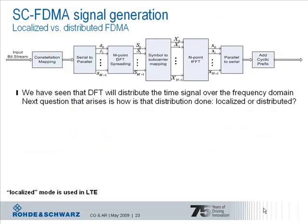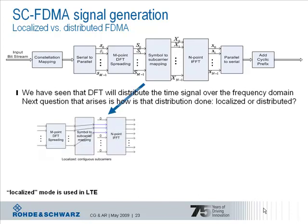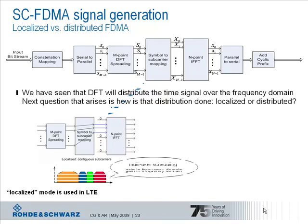The question that comes up is how the subcarrier mapping is realized in the uplink. There are two possibilities, each with one advantage. First, we have localized mapping. In localized mode, the modulation symbols are assigned to adjacent subcarriers as shown in the graph. This gives the advantage of multi-user scheduling gain in the frequency domain. For localized subcarrier mapping, single-carrier FDMA is named as localized FDMA.